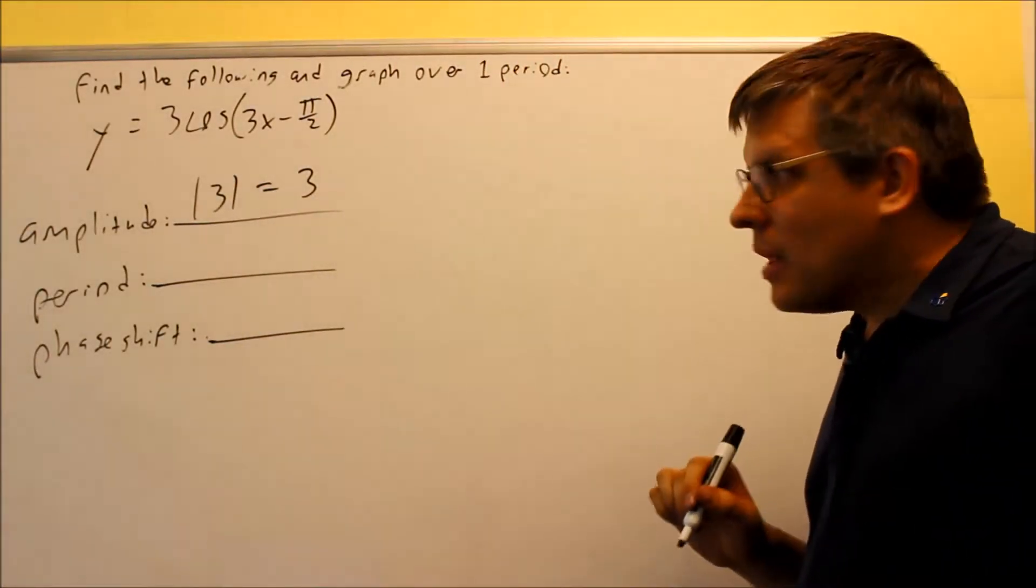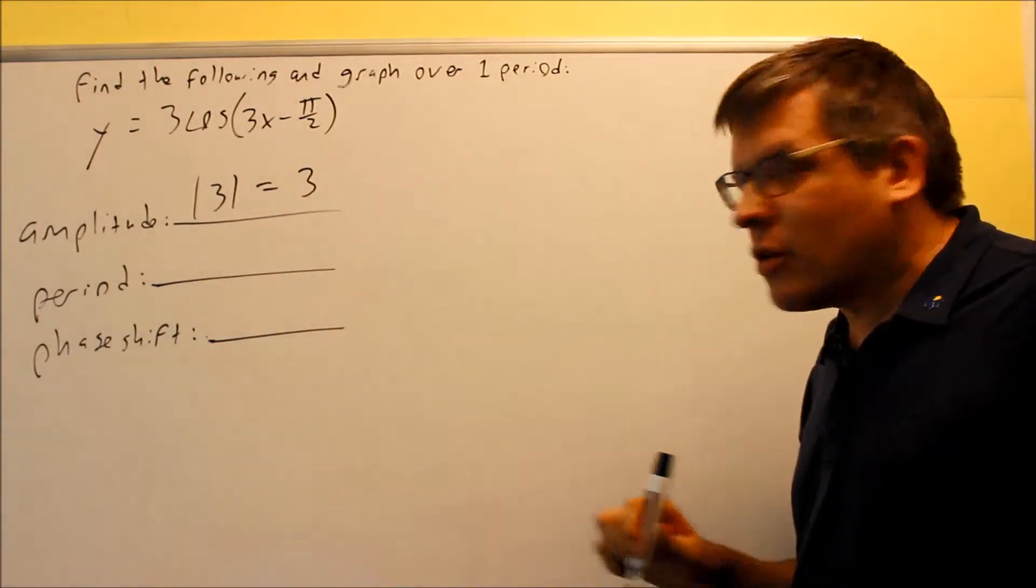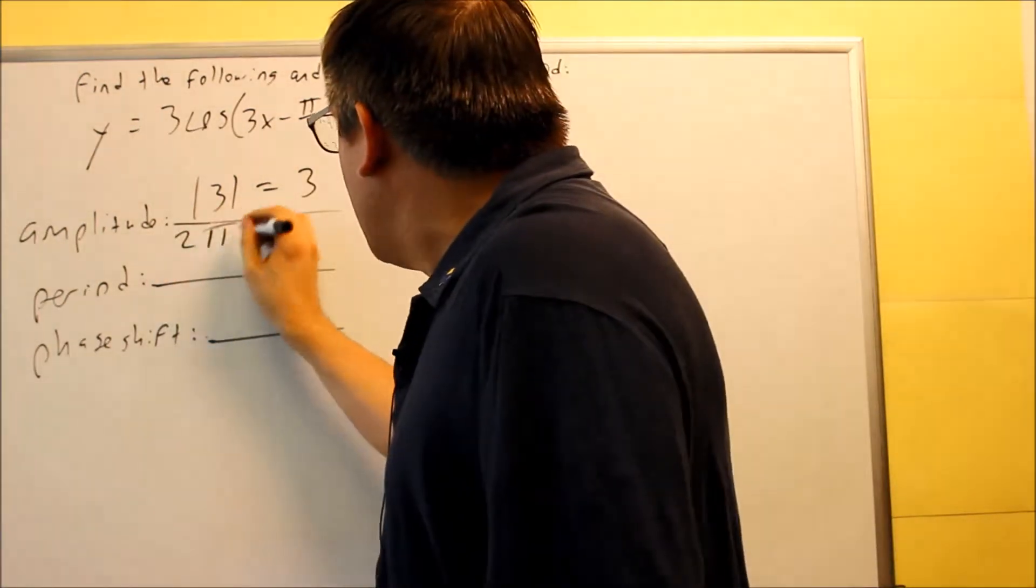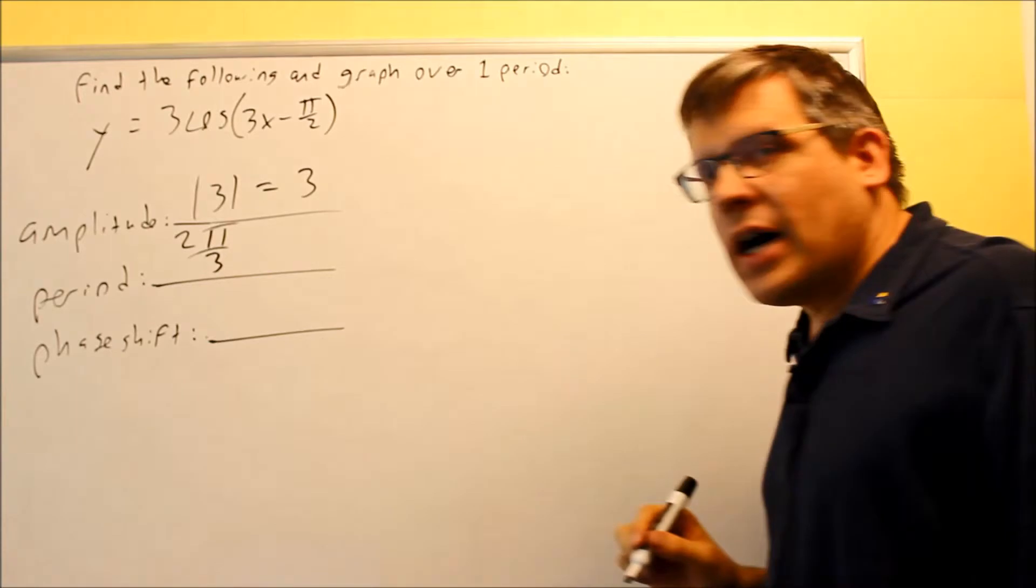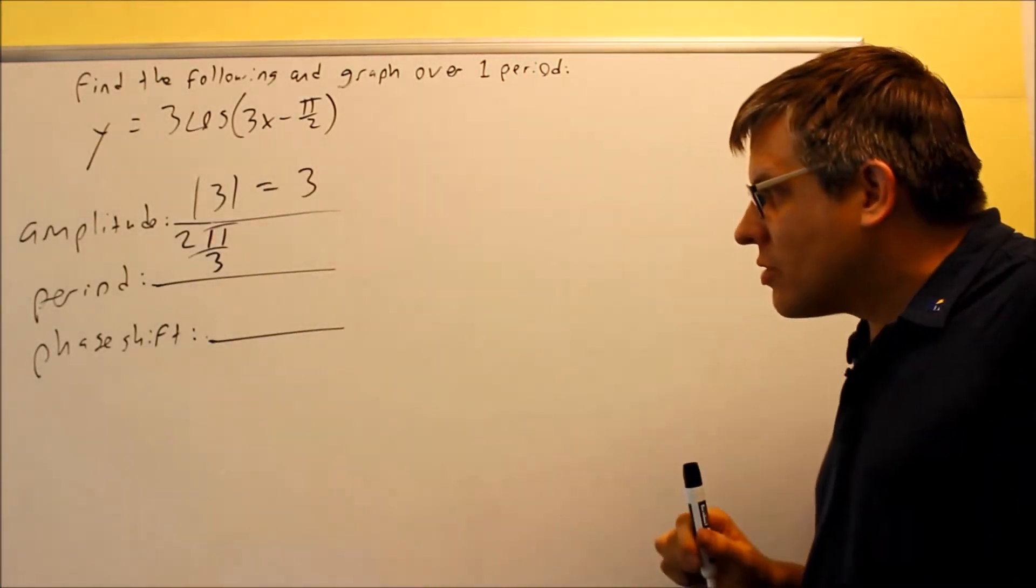Your period is 2π divided by the number in front of the x. For this example, your period is going to be 2π divided by 3 because that's the number in front of the x.